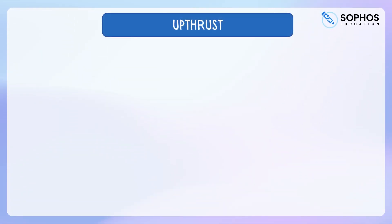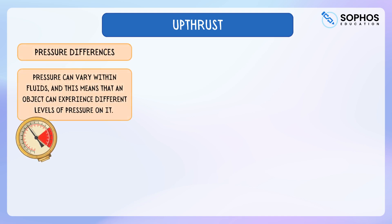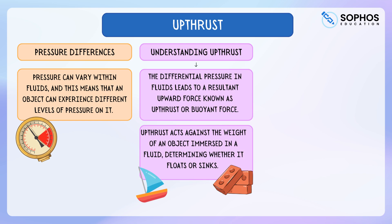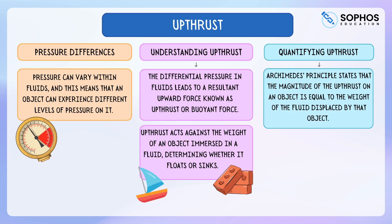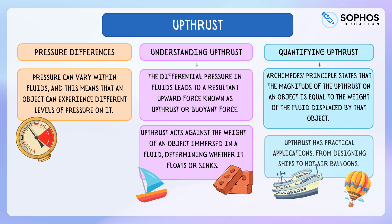In today's lesson, we delved into the concept of upthrust, a crucial principle within fluid dynamics and forces. We began by understanding the pressure differences in fluids, and how these differences create a resultant upward force known as upthrust or buoyant force. We learned that upthrust acts against the weight of an object immersed in a fluid, determining whether the object floats, remains suspended, or sinks. To quantify upthrust, we explored Archimedes' principle, which states that the magnitude of the upthrust on an object is equal to the weight of the fluid displaced by that object. Finally, we discussed the practical applications of upthrust, from the design of ships and submarines, to the operation of hot air balloons, and the behaviour of bubbles in fluids. Our exploration of upthrust not only helps in explaining everyday phenomena, but also underscores its importance in various engineering and scientific contexts.